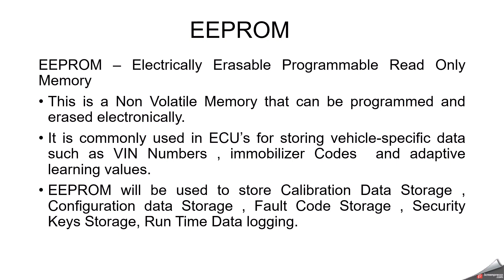For calibration data storage, EEPROM is used to store calibration data such as fuel and ignition timing maps, which can be adjusted for optimal engine performance. The calibration data can be read, modified and written to the EEPROM by the ECU during operation. For configuration data storage, it is used to store vehicle-specific data such as the VIN number, vehicle identification number, engine type and emission control system settings. The immobilizer code and adaptive learning values are also stored inside the EEPROM.